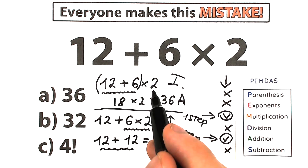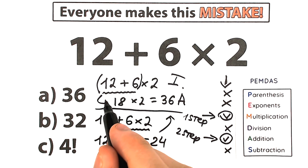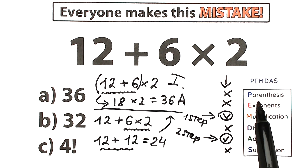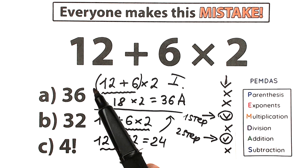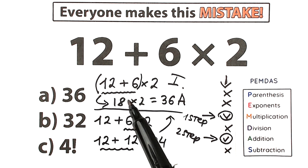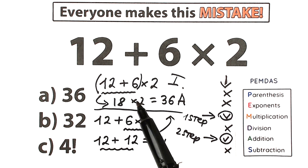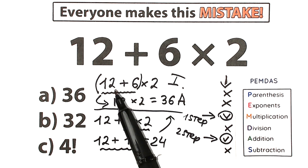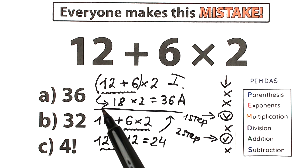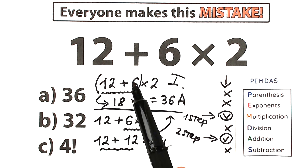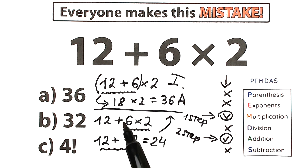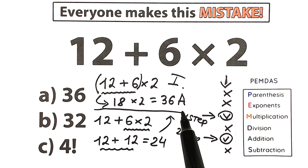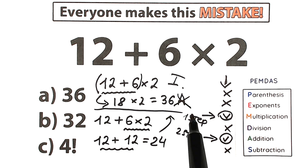Of course, with parentheses this question would be different – parentheses have the highest priority, so if addition were inside parentheses we'd compute 12 plus 6 equals 18 first, then multiply by 2 to get 36. But in our case we don't have parentheses, so we reject option A.